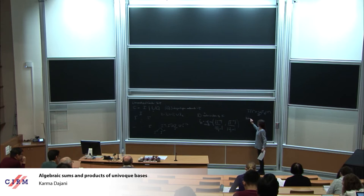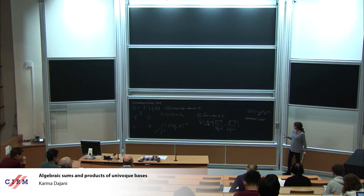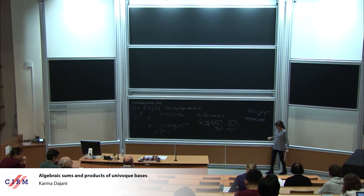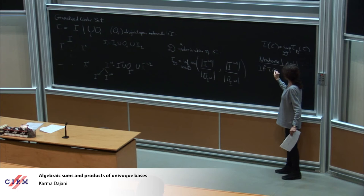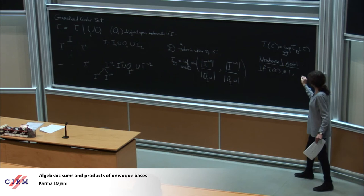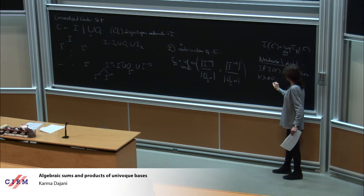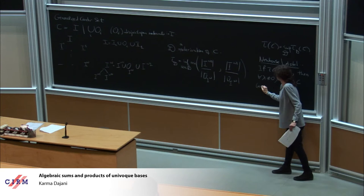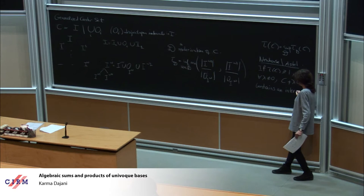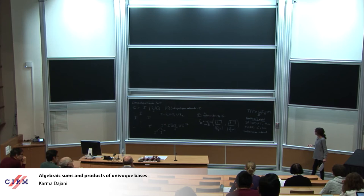The Newhouse–Astels theorem — Astels later improved what Newhouse did — says, in a simplified version I will be using: if τ(C) ≥ 1, so if the Cantor set is thick enough, then for any λ not zero, if I add C to a translate of C, then it contains an interval. So if you want an interval you cannot be removing too much.